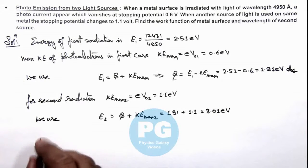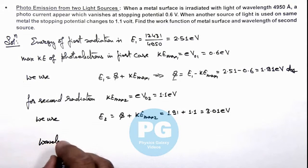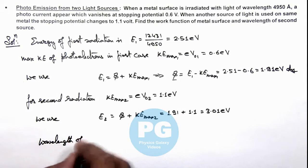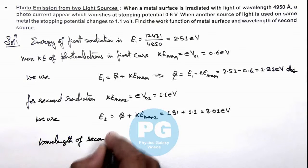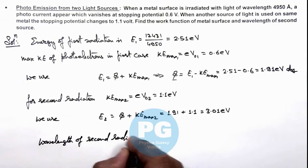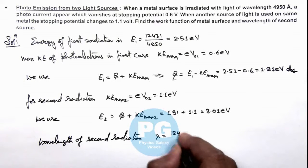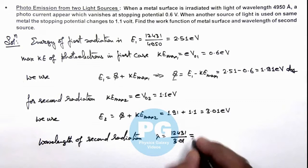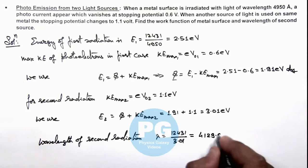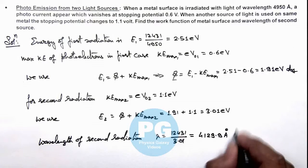If we calculate the wavelength of the second radiation, this can be directly given by lambda equals 12431 divided by energy, which is 3.01. On calculation, we get 4129.9 angstrom. That is the result of this problem.